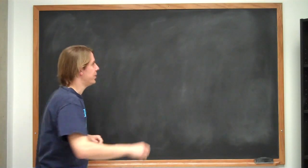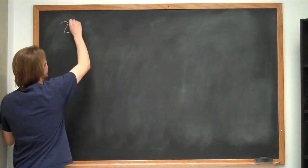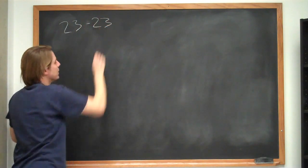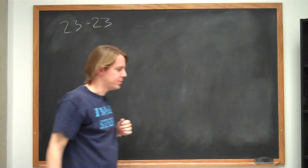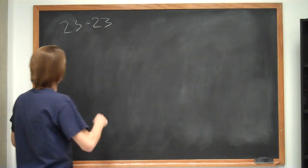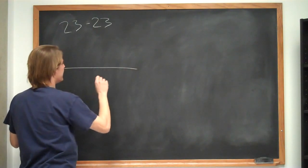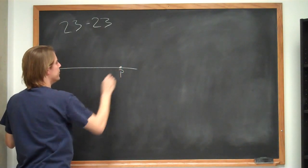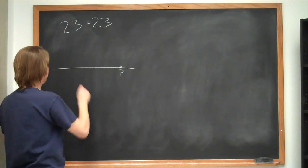So this is problem 23-23. We have a fairly common occurrence. We have three charges on the arc of a circle. So let's say we have an x-axis here.